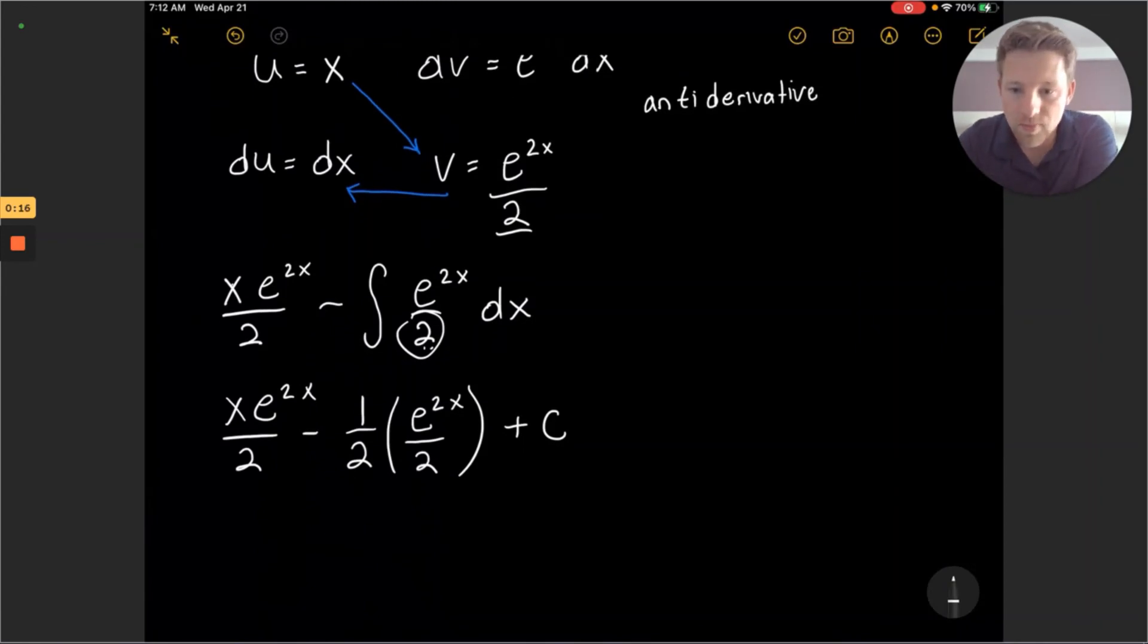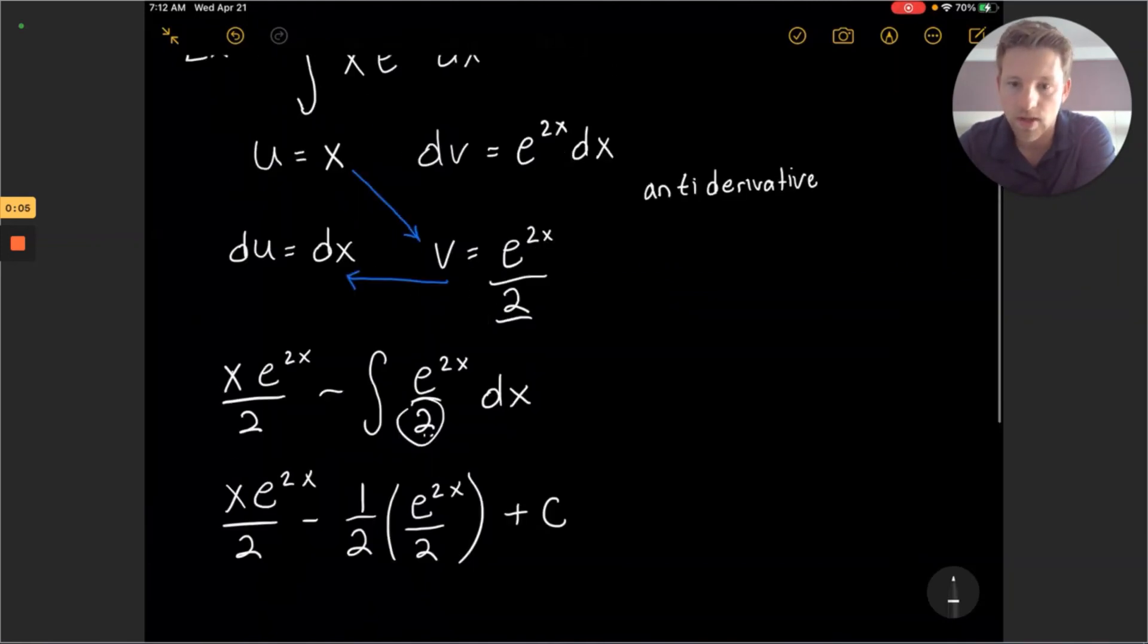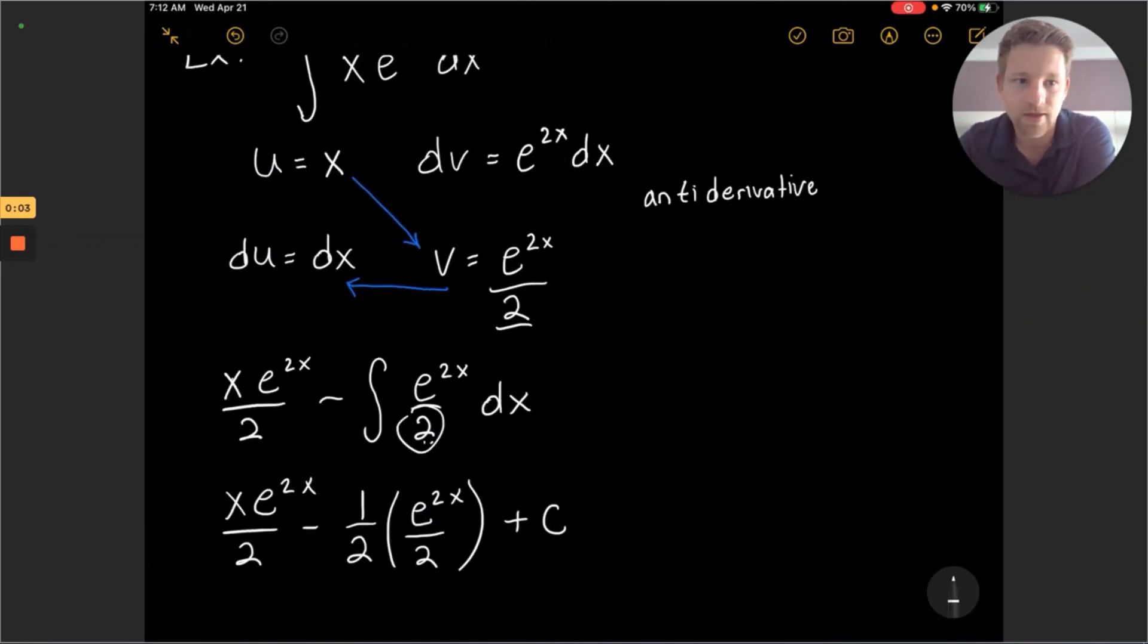So we can simplify this a little bit, making that second term a 4 in the denominator. But other than that, this is the complete antiderivative with the integration by parts technique. Thanks for watching.